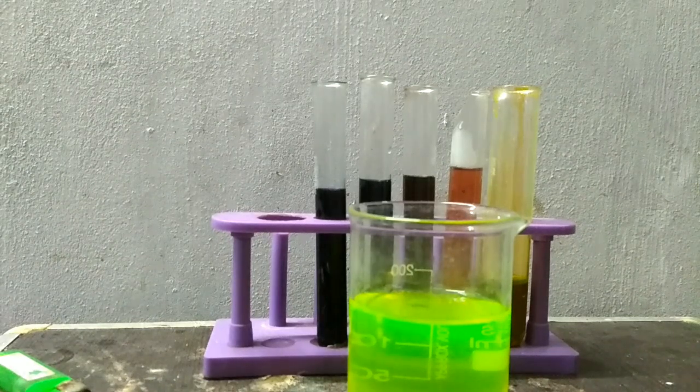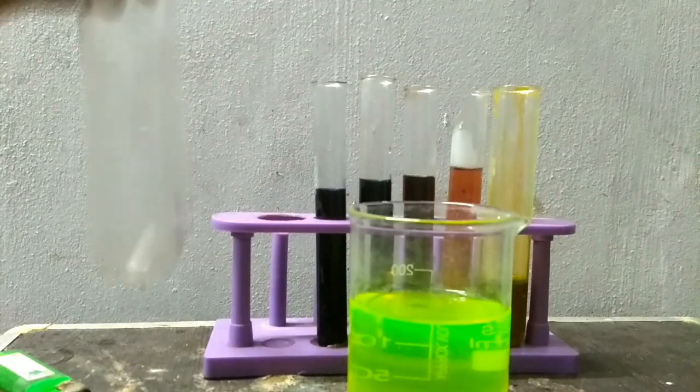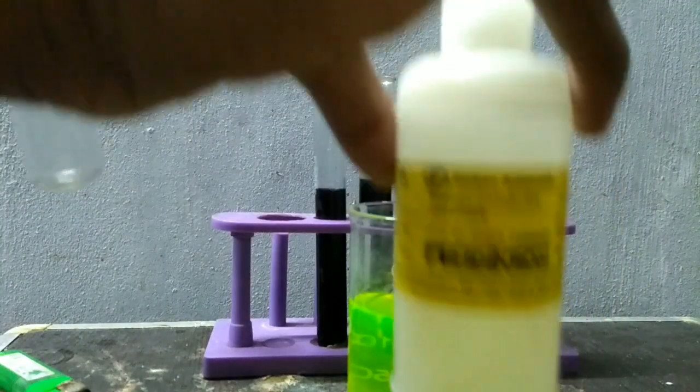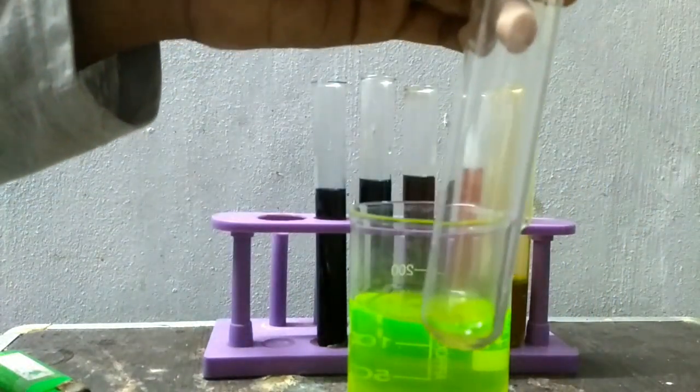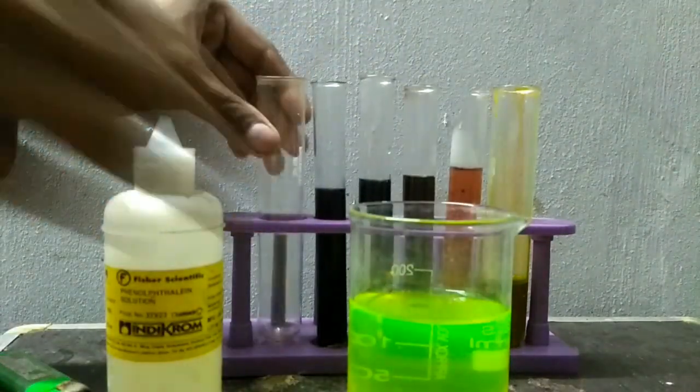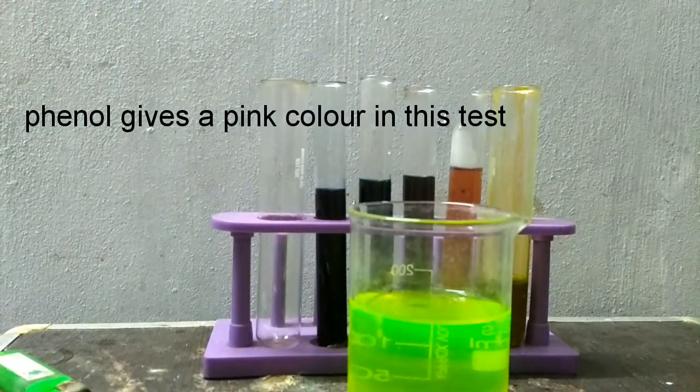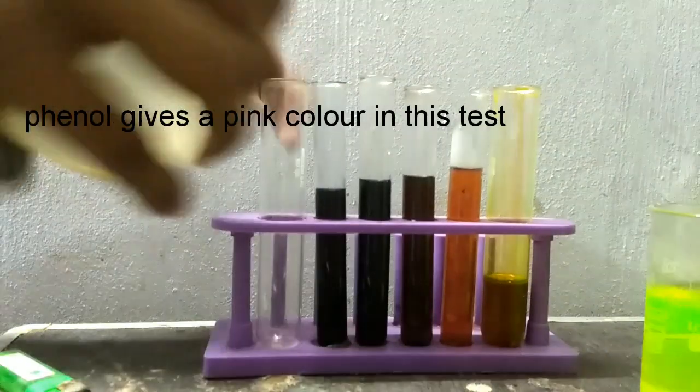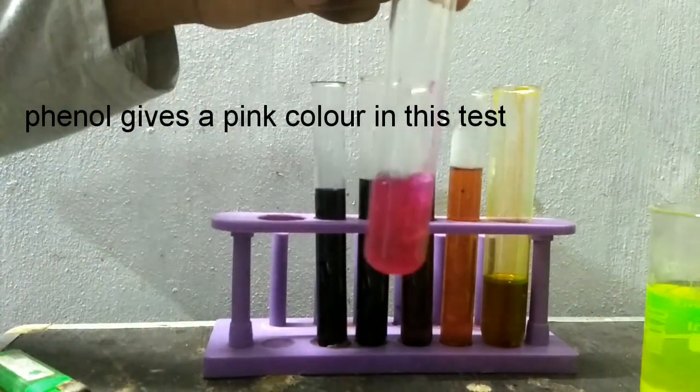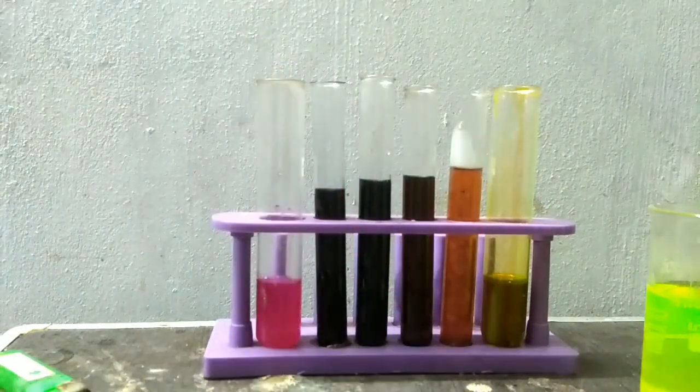I did not have phenol. So I am showing you the color of phenolphthalein from the phenolphthalein indicator solution I had. I will take a few drops of phenolphthalein in the test tube and then add sodium hydroxide to it. And you see there is development of a pink color.